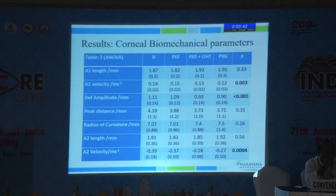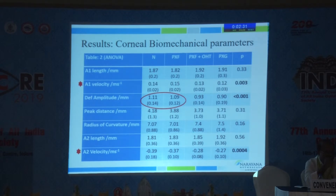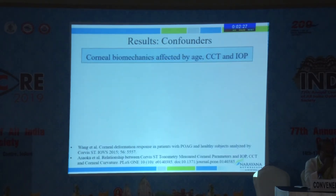Looking at the biomechanical parameters, three showed a difference across the groups. The deformation amplitude was significantly higher in the normal and PXF group compared to the other two groups — that is, it was greater than one. The A1 and A2 velocities were also significantly different across the groups. However, we know that corneal biomechanics is affected by age, CCT, and IOP.